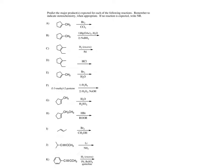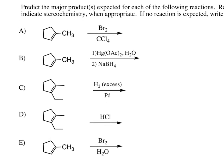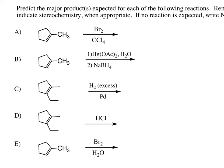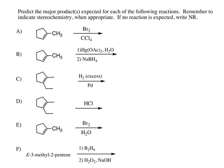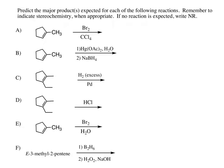Today we're going to work on some predict-the-product problems for alkene reactions. In our first problem, we have a bromination reaction. What happens here is first bromine reacts with the alkene. Bromine is a reactive species; carbon tetrachloride is just our solvent, so we don't need to do anything with that. The first thing that happens is the bromine adds to the alkene to form a bromonium ion.